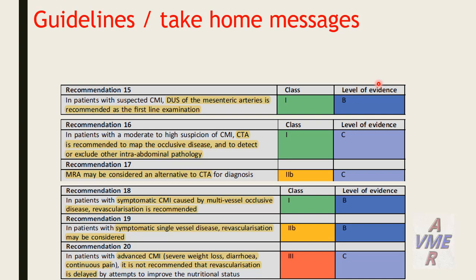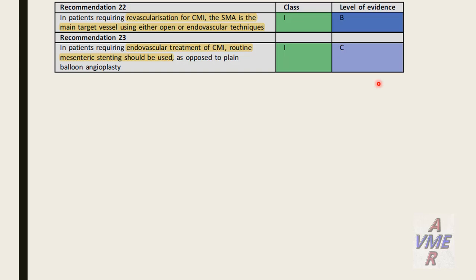In patients with advanced chronic mesenteric ischemia — severe, with weight loss, diarrhea, or continuous pain — it is not recommended to delay revascularization by attempting to improve nutritional status first. When revascularization is required, the superior mesenteric artery is the main target vessel using either open or endovascular techniques.